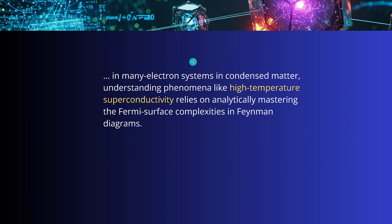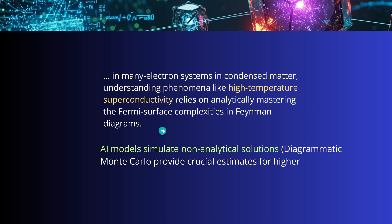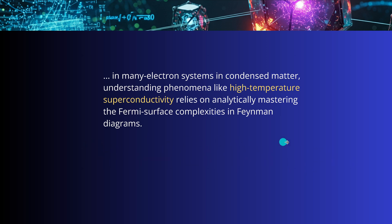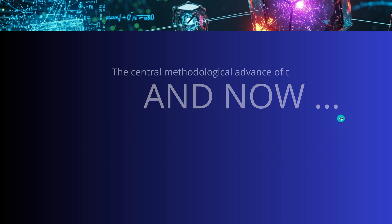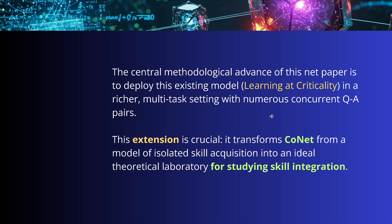This is exactly what we also use in many-electron systems in condensed matter, for understanding phenomena like high-temperature superconductivity, where we calculate Feynman diagrams for Fermi surface complexities. The AI models — we hope, we pray — will simulate non-analytical solutions. We have diagrammatic multi-color expansions that provide crucial estimates for higher-order terms. Can we employ AI for quantum physics? This is absolutely fascinating. Now let's come back and apply this knowledge to artificial intelligence itself, extending this idea from quantum field theory.